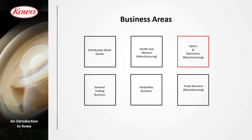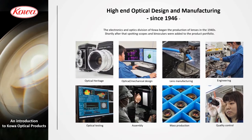Business areas have become quite diverse. Trading of different materials is still a big part of the company. Cova is also known in Japan for manufacturing of medicine and medical technology. And one big part of the company is manufacturing of optics. Cova started to manufacture optical products already in the 1940s — at that time already lenses, as well as sporting optics such as sporting scopes.